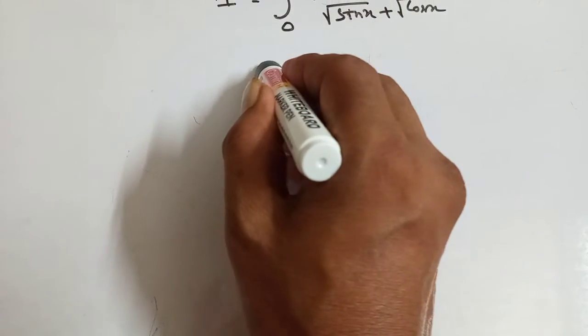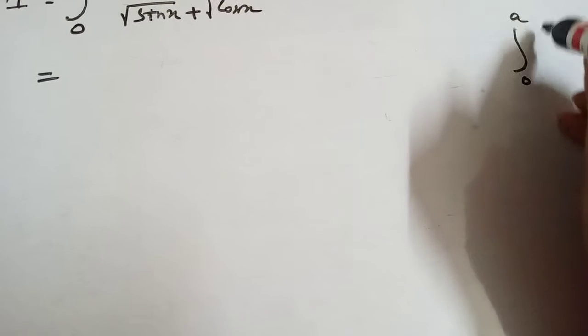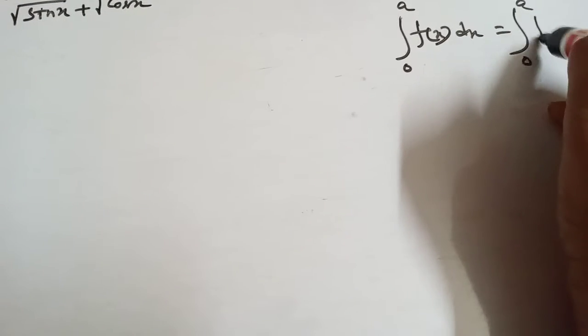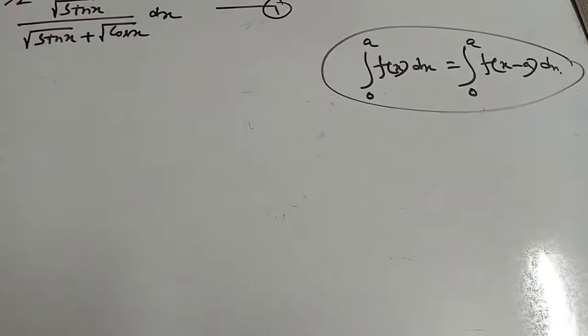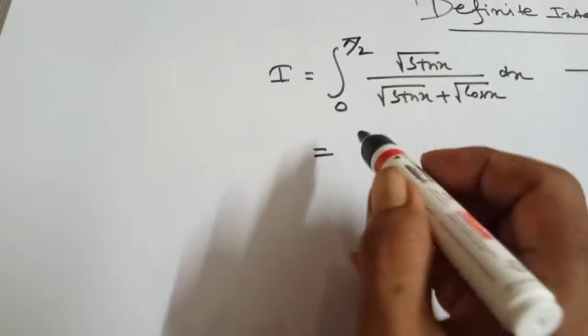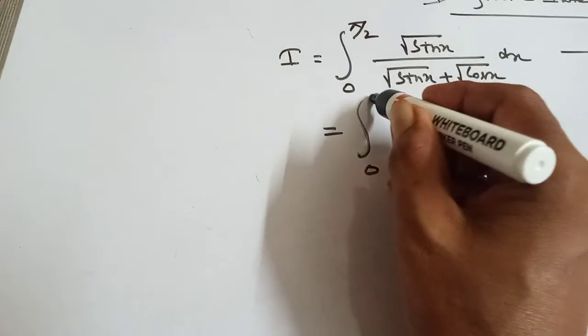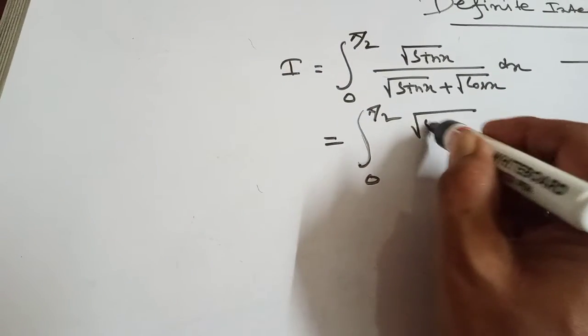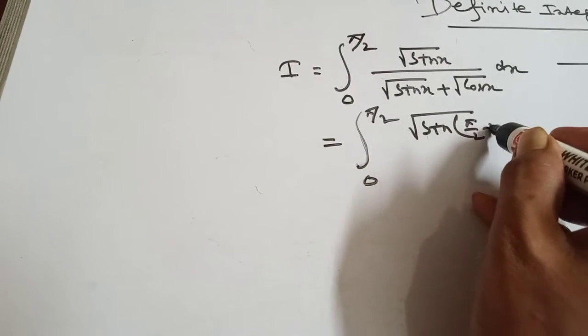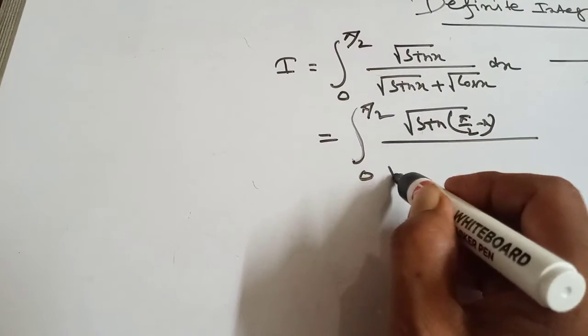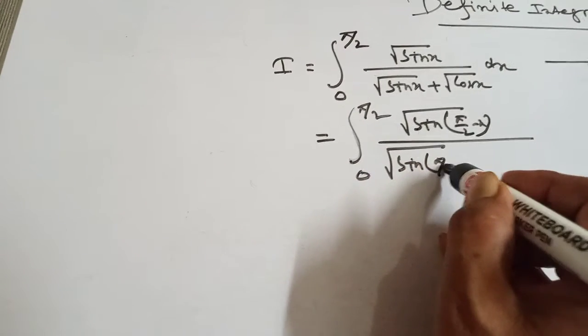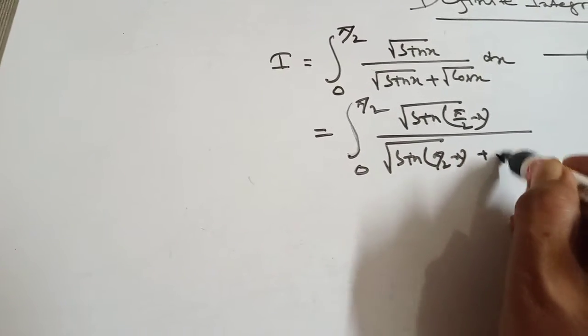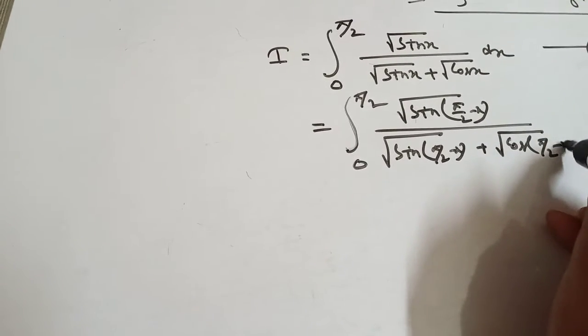Now, instead of x, we put π/2 minus x. Using the property: integral from 0 to a of f(x)dx equals integral from 0 to a of f(a minus x)dx. So we get the integration from 0 to π/2 of √sin(π/2 minus x) divided by √sin(π/2 minus x) plus √cos(π/2 minus x) dx.